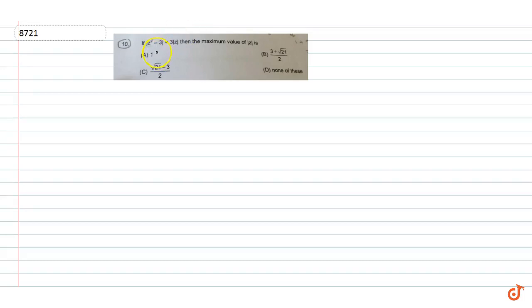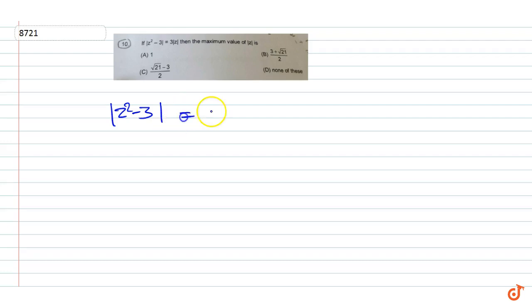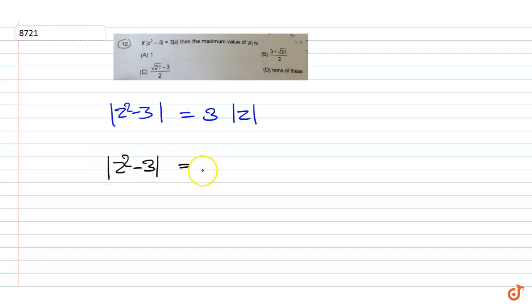In this question, if |z² - 3| = 3|z|, then the maximum value of |z| is what? Here it is given that |z² - 3| = 3|z|, or we can write |z² - 3| = |3z|.